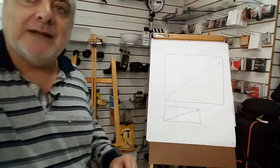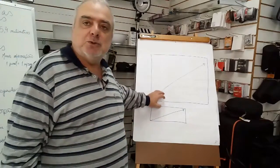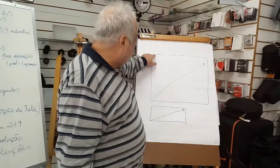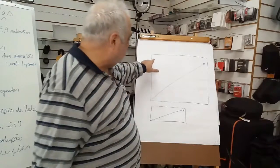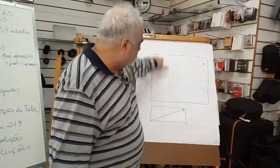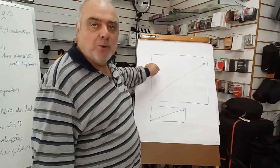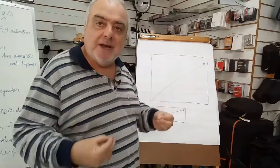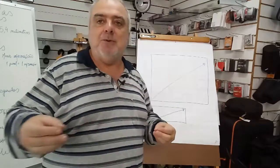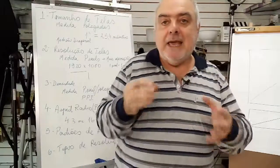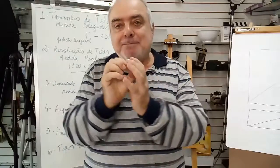Da mesma forma, podemos entender por este quadro aqui: imaginariamente, há uma coluna e linhas. Quando as duas se cruzam, há um ponto. Portanto, quanto mais linhas e mais colunas, maior a resolução. E quando digo maior a resolução, estou dizendo, em outra análise, que tenho uma informação mais precisa.